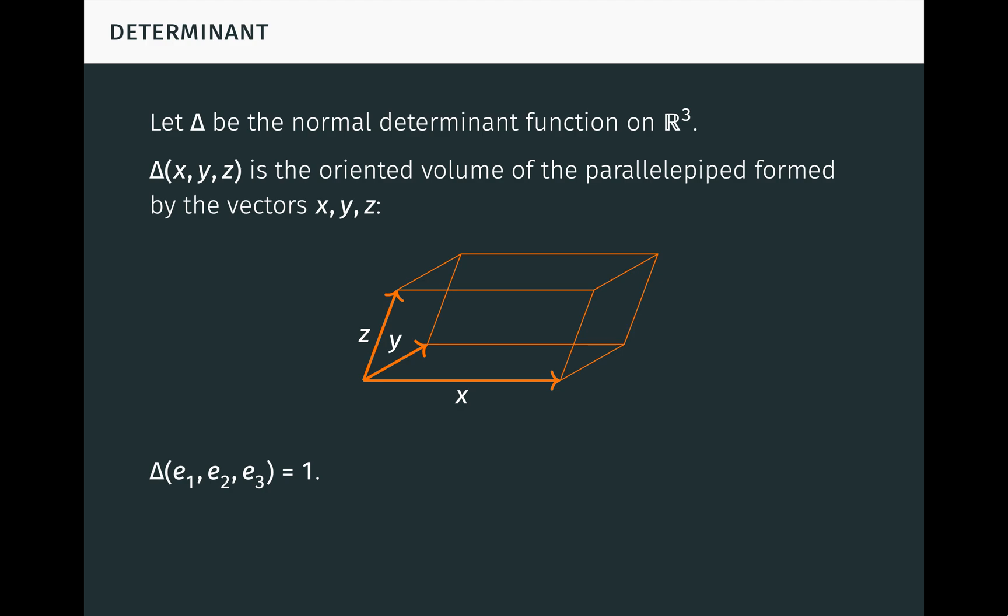Also, delta of x, y, z is positive if and only if x, y, and z are positively oriented. As a determinant function, delta is multilinear and alternating. Being multilinear means it's linear in each of the arguments x, y, and z when the other two are held fixed. Being alternating means it's equal to zero when two of the arguments are equal to each other, or equivalently, it changes sign when two of the arguments are interchanged.